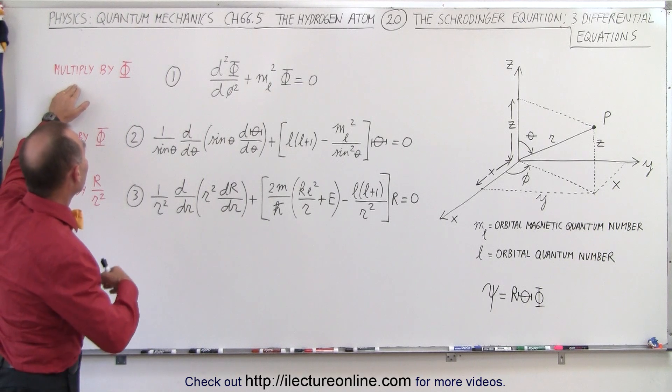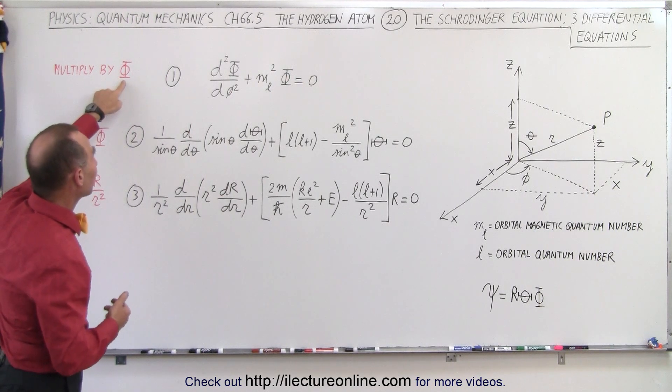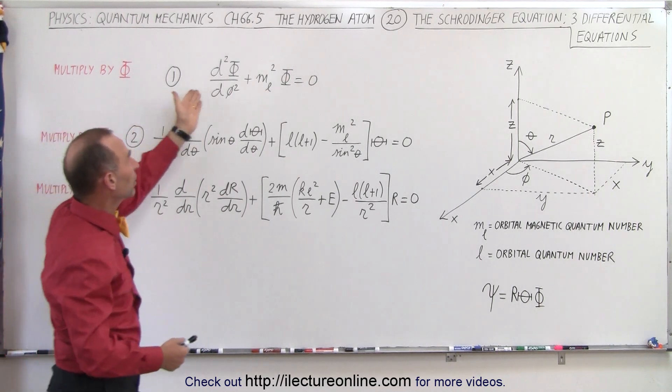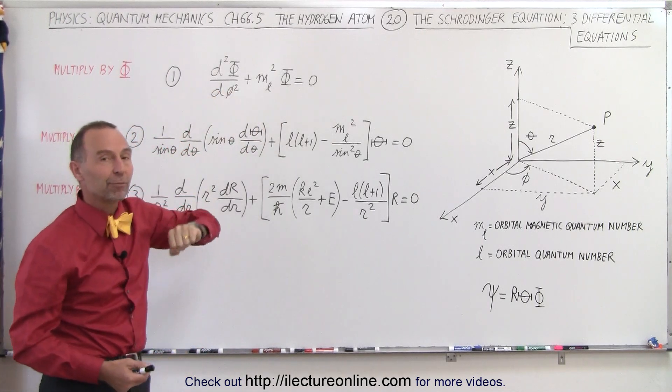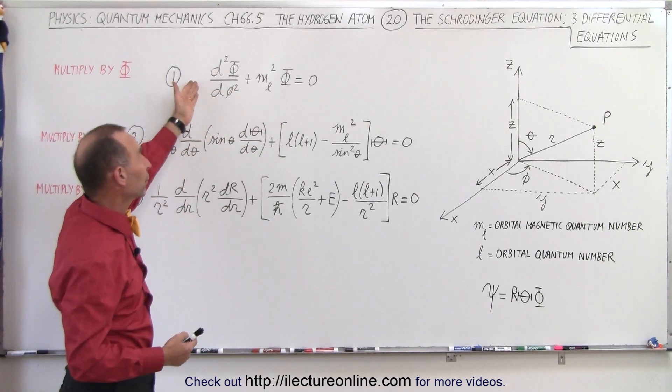So in the first equation, we're going to multiply both sides by the function phi. When we do that, we end up with a differential equation in a very familiar format for which we know the solution quite readily.